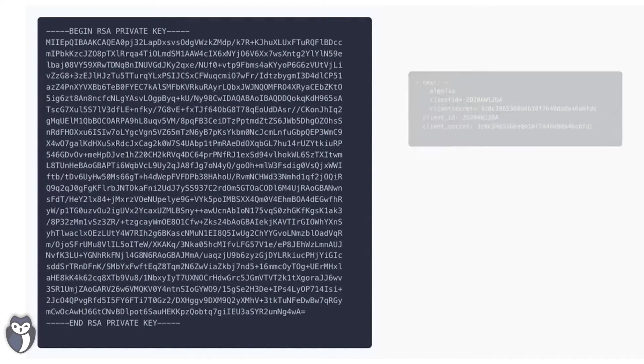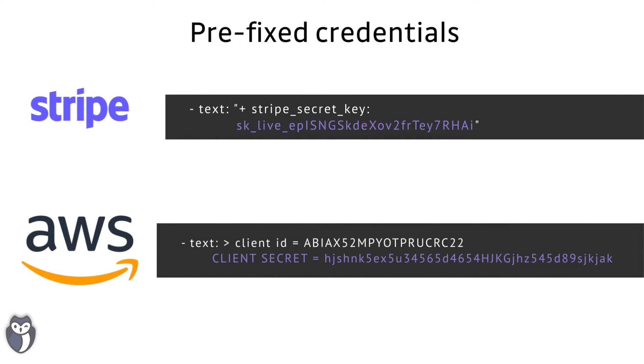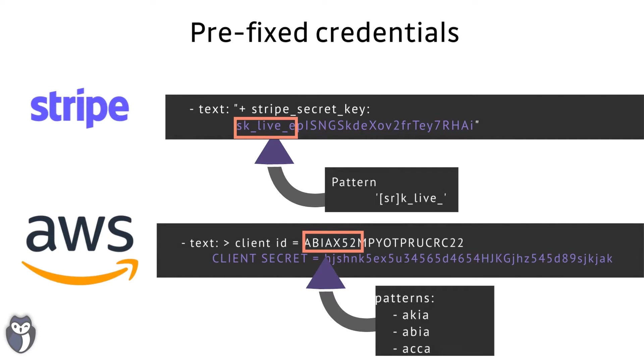Now these strings can come in lots of different shapes and sizes. Security certificates like RSA certificates can be quite long, whereas an API key can be quite short. Some API keys may be pre- or post-fixed, which means they share the same characters at the start or end of the string, but most secrets aren't and are just a highly randomized value that contains different types of character sets.